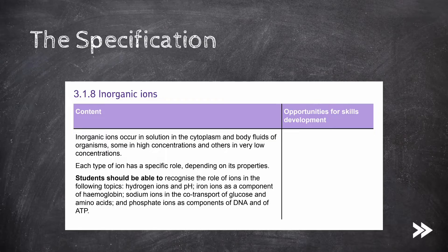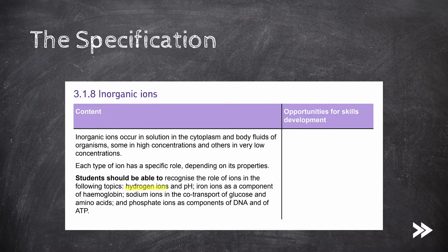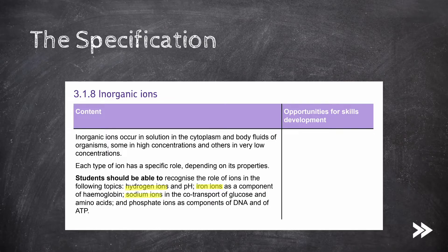The specification specifically mentions the role of the following ions: the role of hydrogen ions in determining pH, the role of iron ions as a component of hemoglobin, sodium ions in the co-transport of glucose and amino acids, and phosphate ions as components of DNA and ATP.